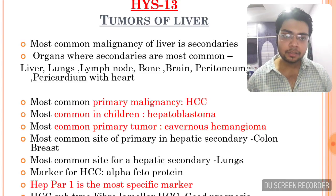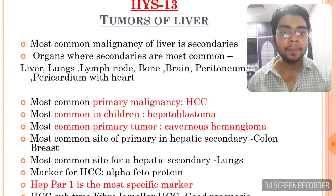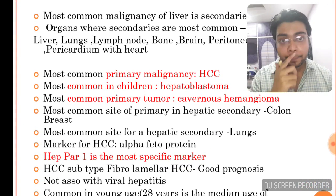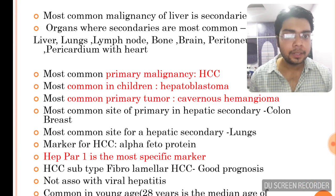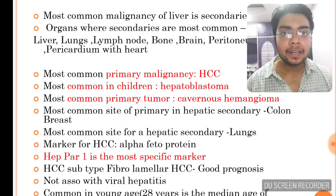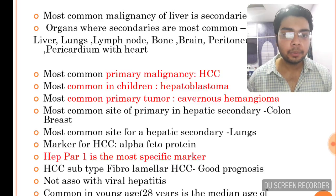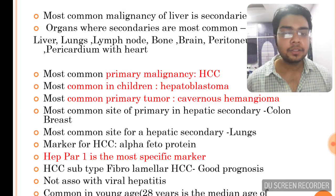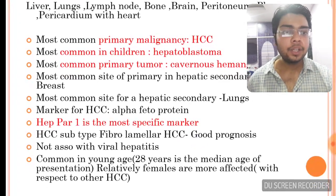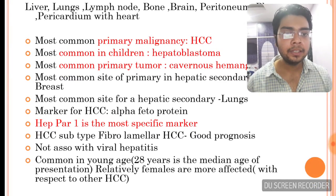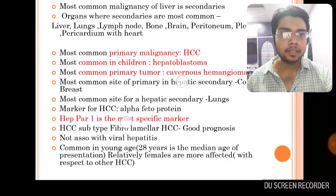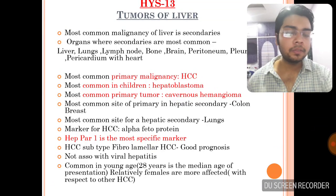The marker for hepatocellular carcinoma is alpha-fetoprotein, but the most specific marker — which is very important — is HEPPAR1. The subtype fibrolamellar hepatocellular carcinoma has a good prognosis, is not associated with viral hepatitis, is commonly found in young age with a median age of 28, and females are more common than males.